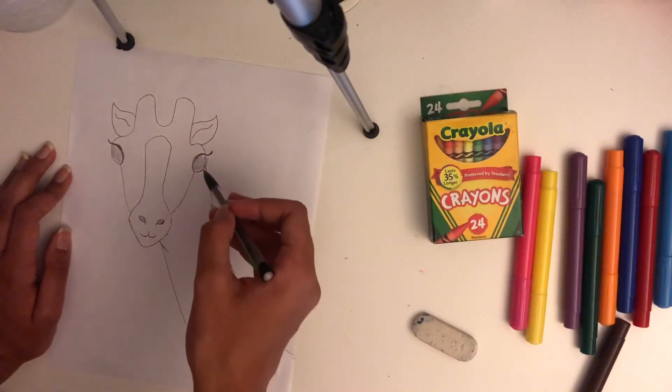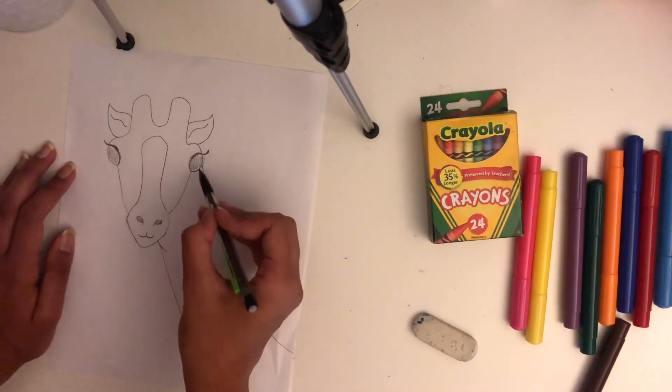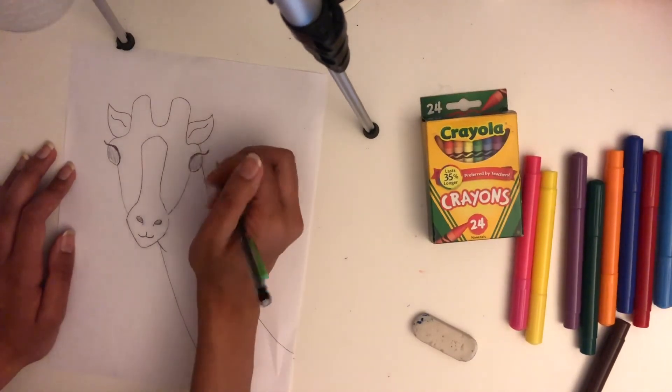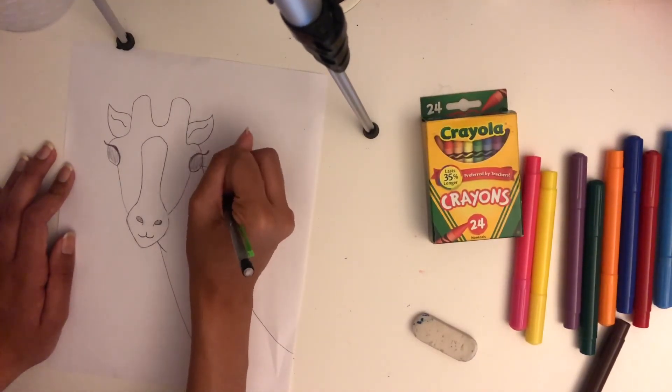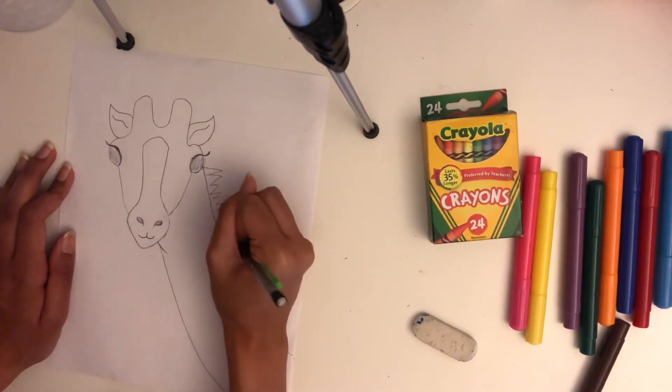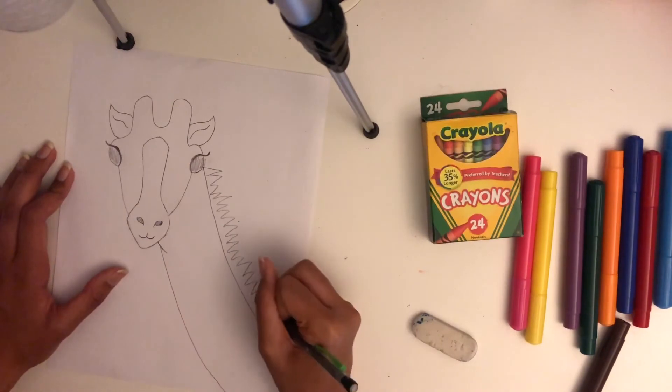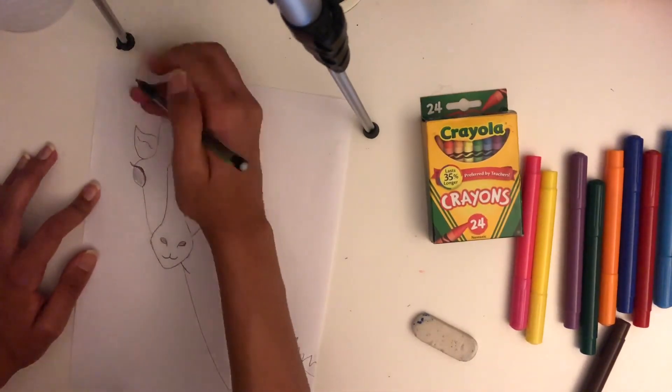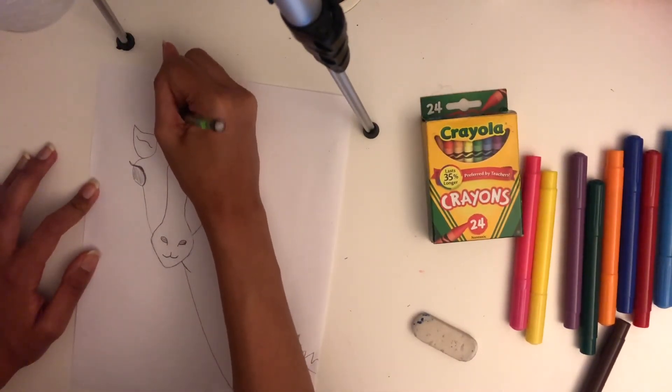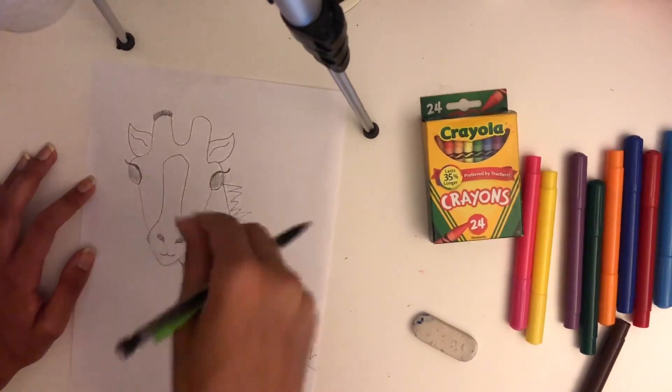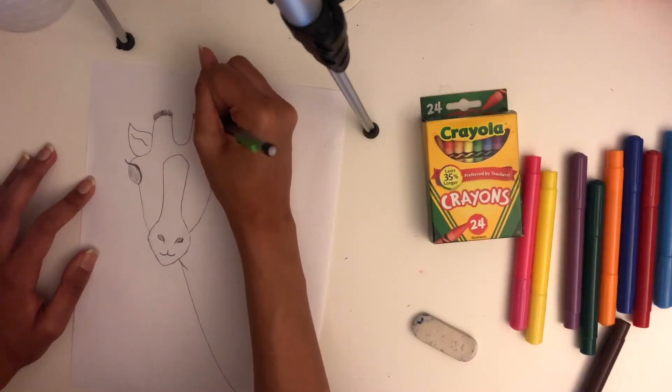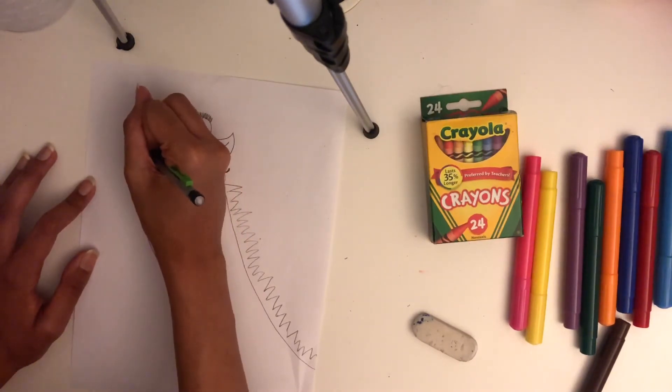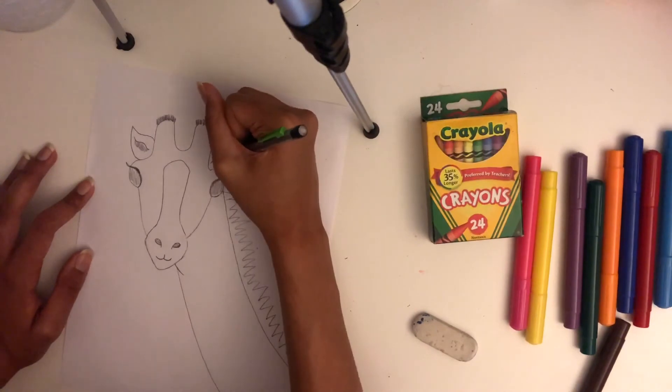So now I'm going to draw the fur at the back of the neck. And I'm just going to do that by doing triangles, zigzagged. All that's really left is to add some minor details. So at the top of these horns here, I'm just going to make these lines. And that's just a little bit of blackish, kind of dark brown fur at the top. And same with under this line for the ears. I'm just going to add a little shading.